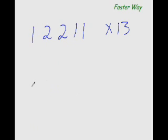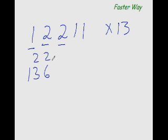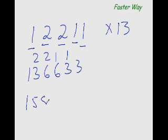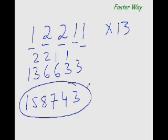What is 12,211 times 13? 1×13 is 13, 2×13 is 26, 2×13 is 26, 1×13 is 13, 1×13 is 13. Adding left to right with the look-ahead: 1, 3+2 is 5 (next sum under 10, keep 5), 6+2 is 8 (next sum under 10, keep 8), 6+1 is 7 (next under 10), 3+1 is 4, then 3. Answer is 158,743.